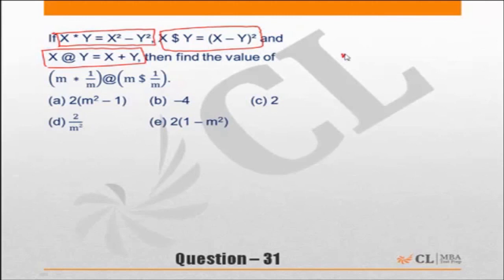Let me assume m equal to 2. If m is equal to 2, what I need to find is 2 star 1 by 2 at the rate of 2 dollar 1 by 2. So let us calculate each of these separately.